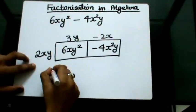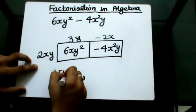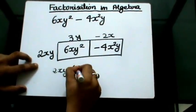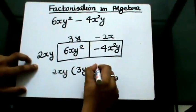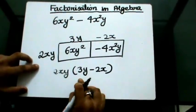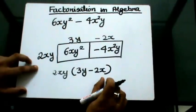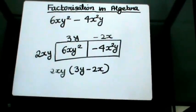So my factorized form will be 2xy(3y - 2x).